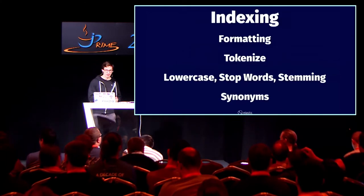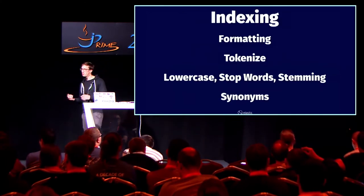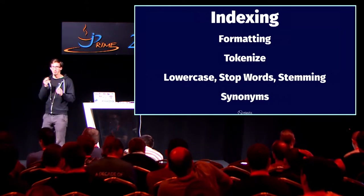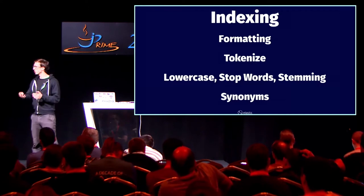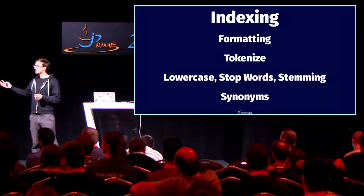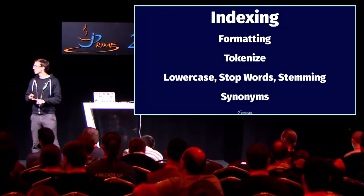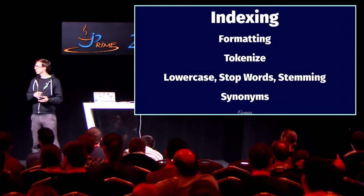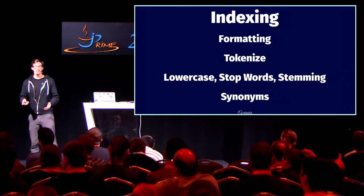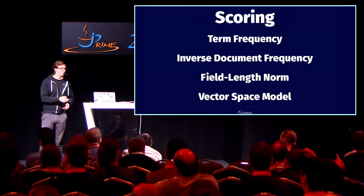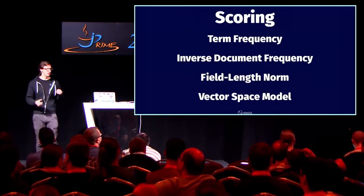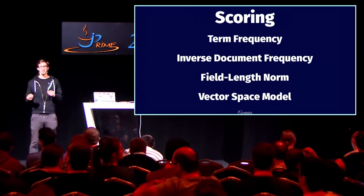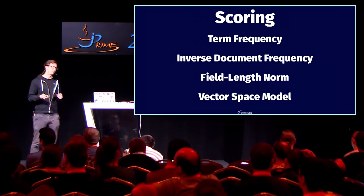To conclude: we've seen how to actually store results — we removed formatting, we tokenized on white spaces and punctuation marks, we lowercased everything, we removed stop words, we stemmed everything to the root of the words, we added synonyms. Then we searched. And we saw term frequency, inverse document frequency, the field length norm, and we saw how the vector space model works.